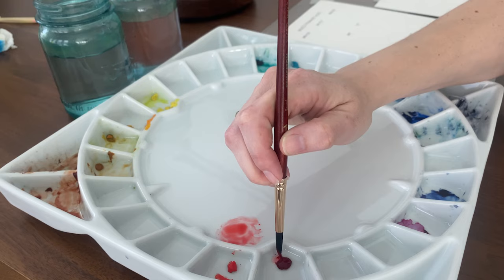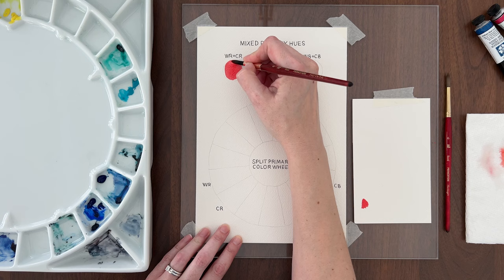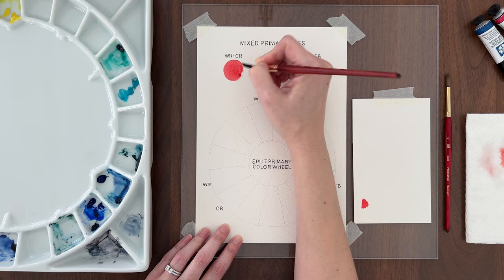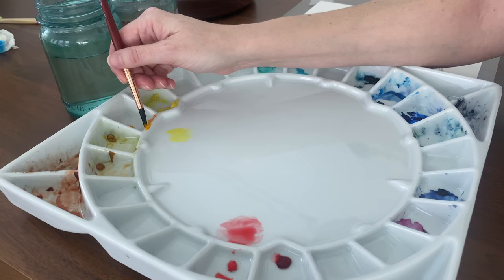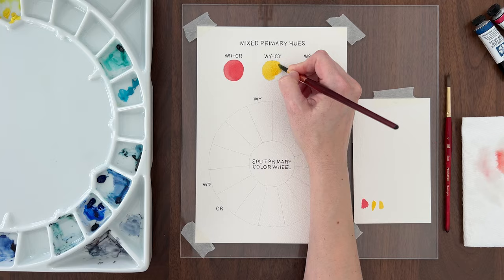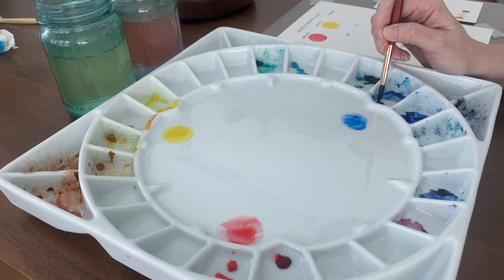Now, you might be wondering how do you get a bright red, yellow, or blue from these colors. When using split primaries, you can mix the two different primaries together to get the mixed primary hue. That is the red, blue, and yellow you typically think of.